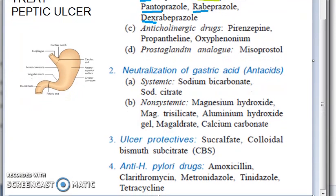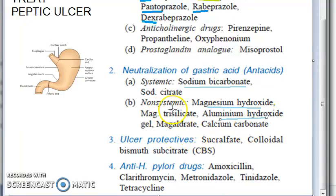Misoprostol, the prostaglandin analog, can also cause abortion, so you should not prescribe it to pregnant people. For neutralization of gastric acid — where the acid is present and you're trying to neutralize it — you have sodium bicarbonate, sodium citrate, magnesium hydroxide, and aluminium hydroxide. Systemic ones like sodium bicarbonate completely deacidify the body since it's an alkali, while non-systemic ones only act locally in the stomach.